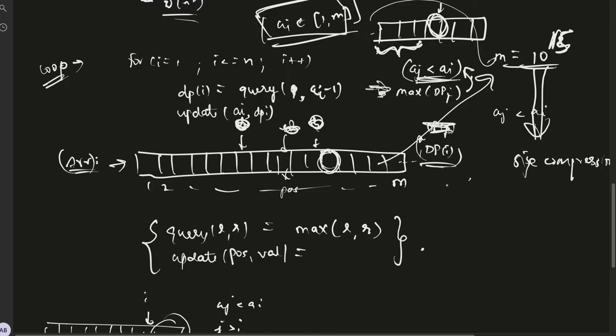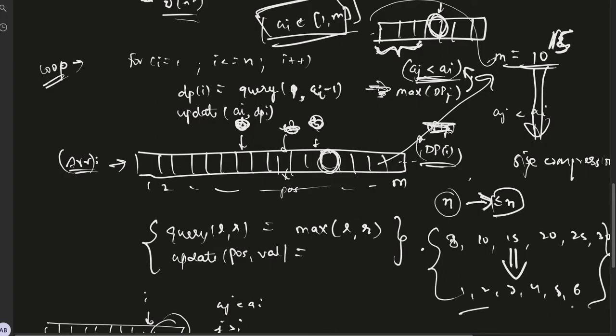Why we can use it? Because since there are total n elements, the number of unique elements must be less than or equal to n. So if, for example, elements are 8, 10, 15, 20, 25, 30, we can compress them to be 1, 2, 3, 4, 5, 6, such that ordering between elements remains the same, but their range is compressed.